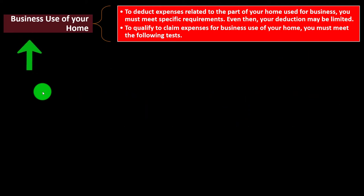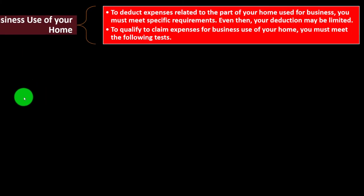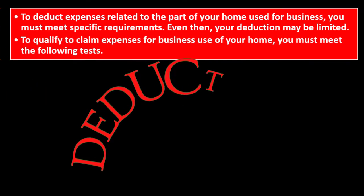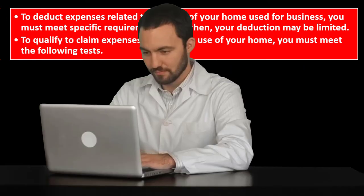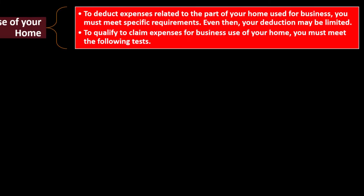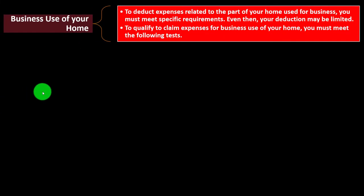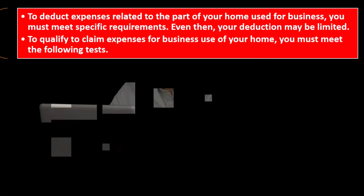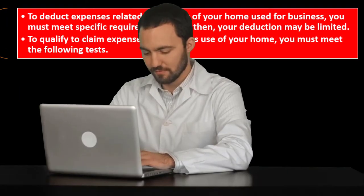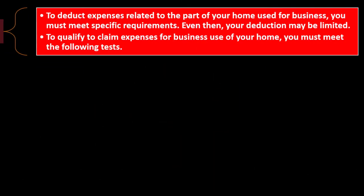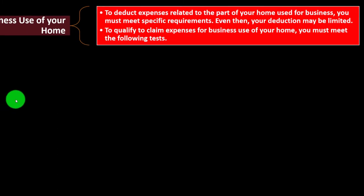So we have the Business Use of Your Home. Ordinary and necessary expenses are typically those deductible expenses. If I did my work for my business at some other location and rented it, for example, or purchased it, I would get the deduction for the rental or possibly the depreciation related to that place. But what if I work from my home, which is my personal home, but now I have a business component to it?